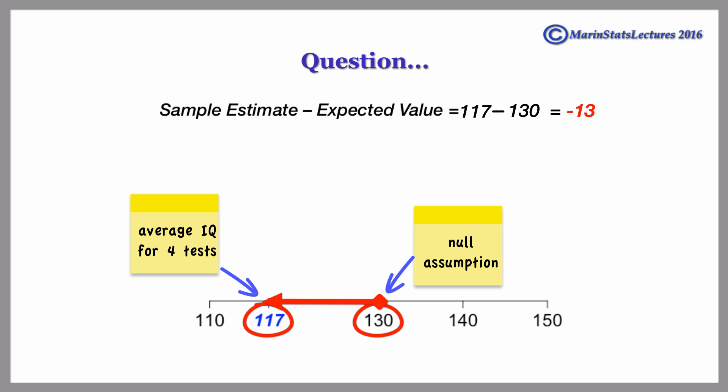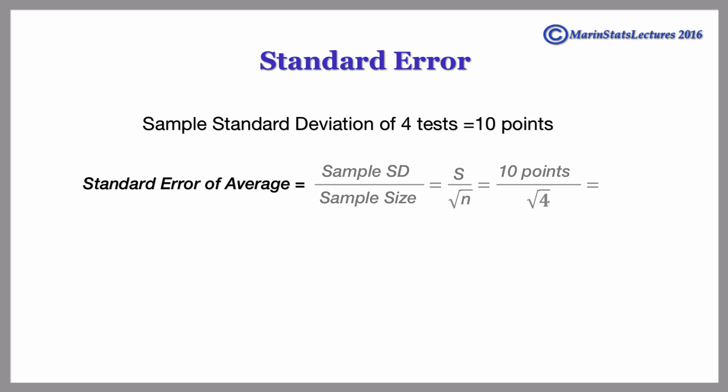We need to know something about the variability of Kian's scores on the IQ tests. Without getting bogged down in the calculations, let's suppose that the sample standard deviation of his four IQ test scores is 10 points, and hence the standard error of the average is 5.